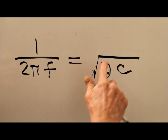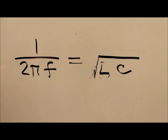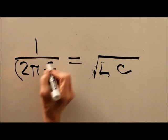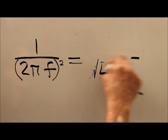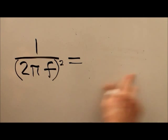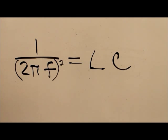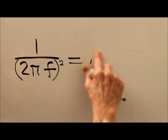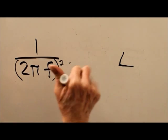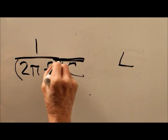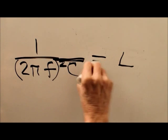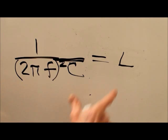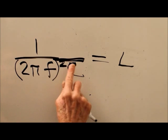...equals the square root of LC. Well that's great. Let's square both sides. One over two pi f, now we've got this. And finally we want to determine L, so we divide through by C, and we get L equals one over two pi f, the quantity squared, times C. And as things work out, because you're just multiplying L by C, you can also transpose these and get the same result.